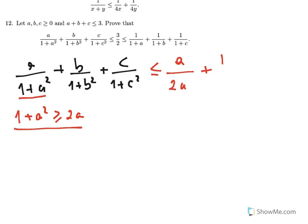Do the same thing for the other terms: B over 2B and C over 2C. Each fraction equals 1 over 2, so the sum is 3 over 2. The first part is easily done.